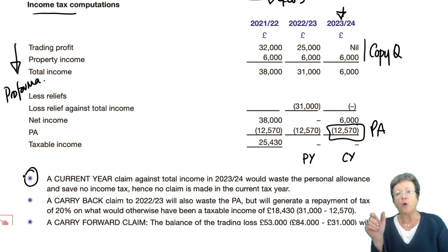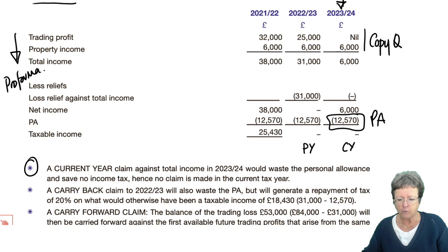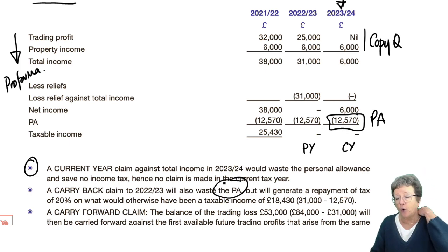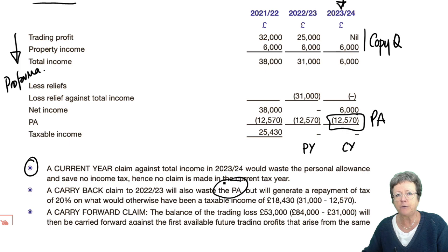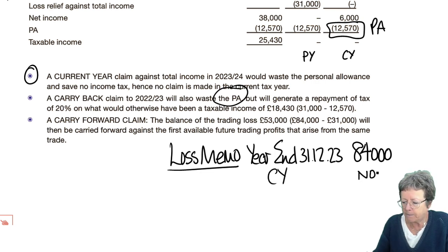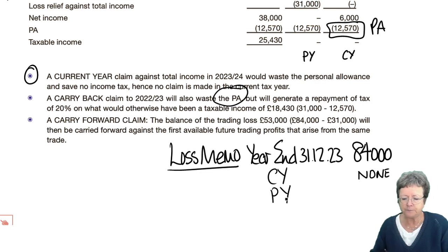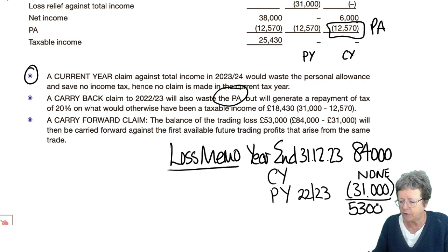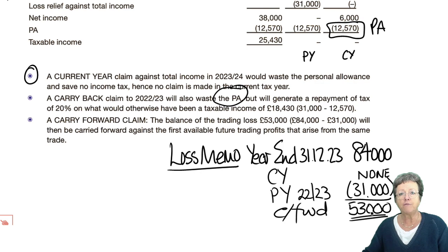The rule is 'and/or', so you can do either, and in whichever order you like. A carry-back claim will also waste the personal allowance, and it is an all-or-nothing claim, so you have to make it in full if you want. But it will generate an income tax refund. So we're not going to do a current year claim, but we are going to do a previous year claim in 2022-23 of 31,000 — all or nothing — which leaves us a balance of 53,000. This will then need to be carried forward to be offset against future profits from the same trade.